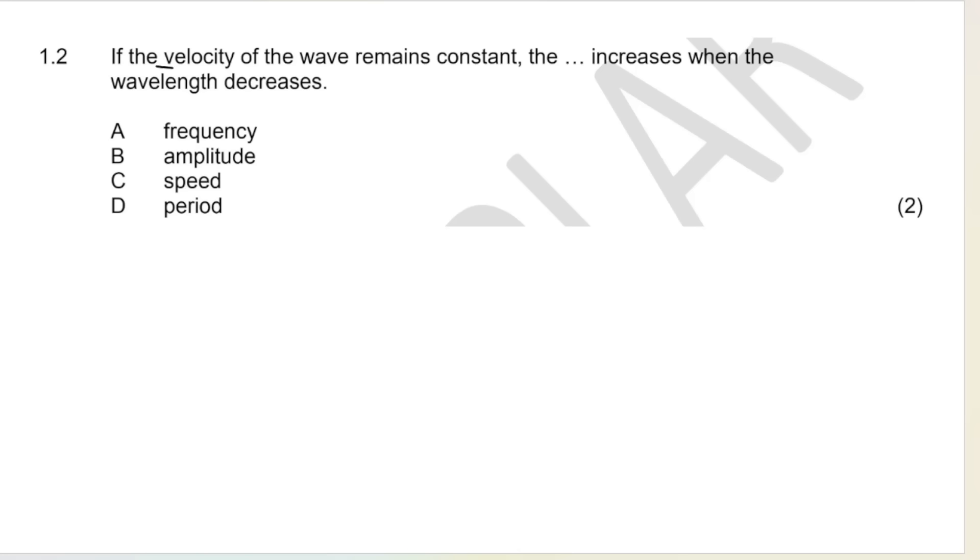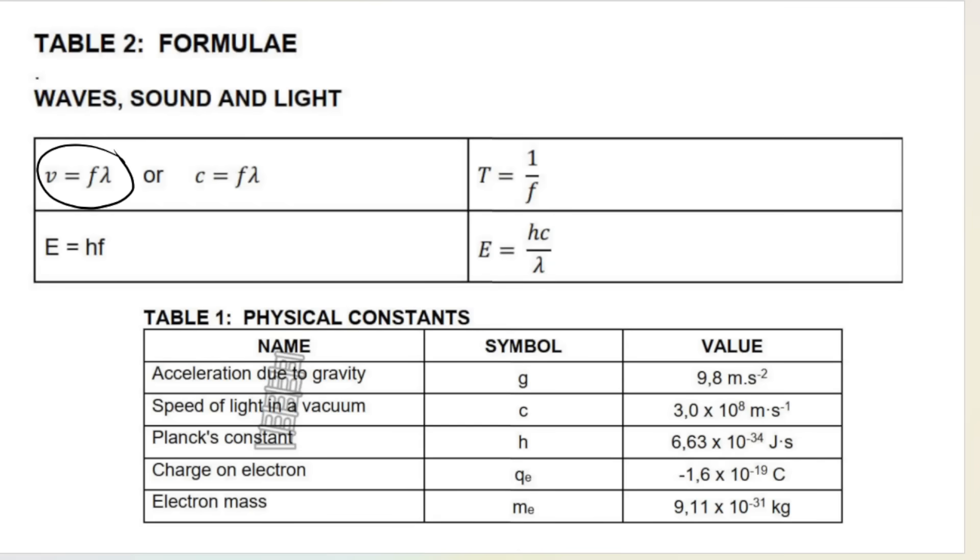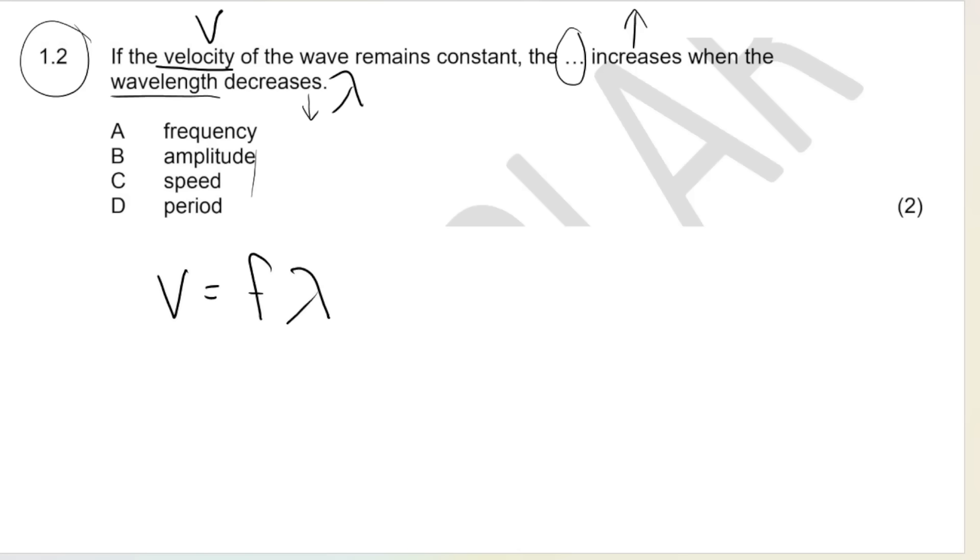Another multiple choice question. If the velocity of the wave remains constant, something increases when the wavelength decreases. This is a very common question or a similar type of question that you will get in multiple choice questions. And they want you to work with the relationship between the variables mentioned in this question. So we've got velocity and we've got wavelength. So what formula do you know that relates all of these together? Well, it'll be this formula over here. So we've got velocity is equal to frequency times wavelength. They're saying if the velocity of the wave remains constant, so that means it stays the same. Something will increase when wavelength decreases. So if this goes down, what will have to increase? And it's kind of obvious if you look at the formula. Frequency will have to increase. So your answer is A, frequency. Because if this number goes down, this number has to go up in order to keep the speed constant.